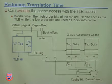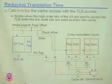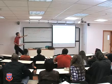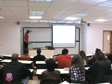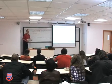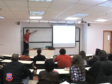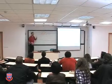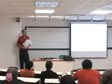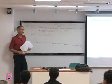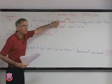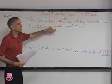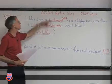Why do direct map caches have a higher miss rate than set associative caches? Why do these have a higher miss rate than these? Because these have a higher conflict miss rate than these. Set associativity reduces conflict misses.